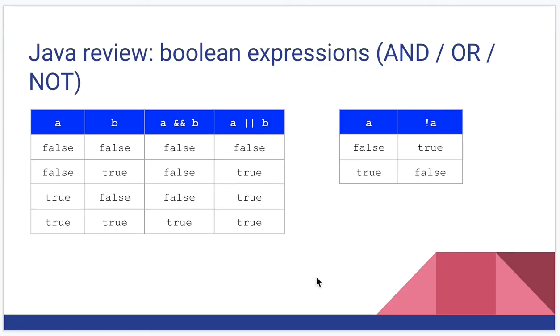So let's go back and review some things from 1301. We had these Java Boolean expressions, and, or, and not. And as a refresher, and was two ampersands, or was two vertical lines, what we call pipes.